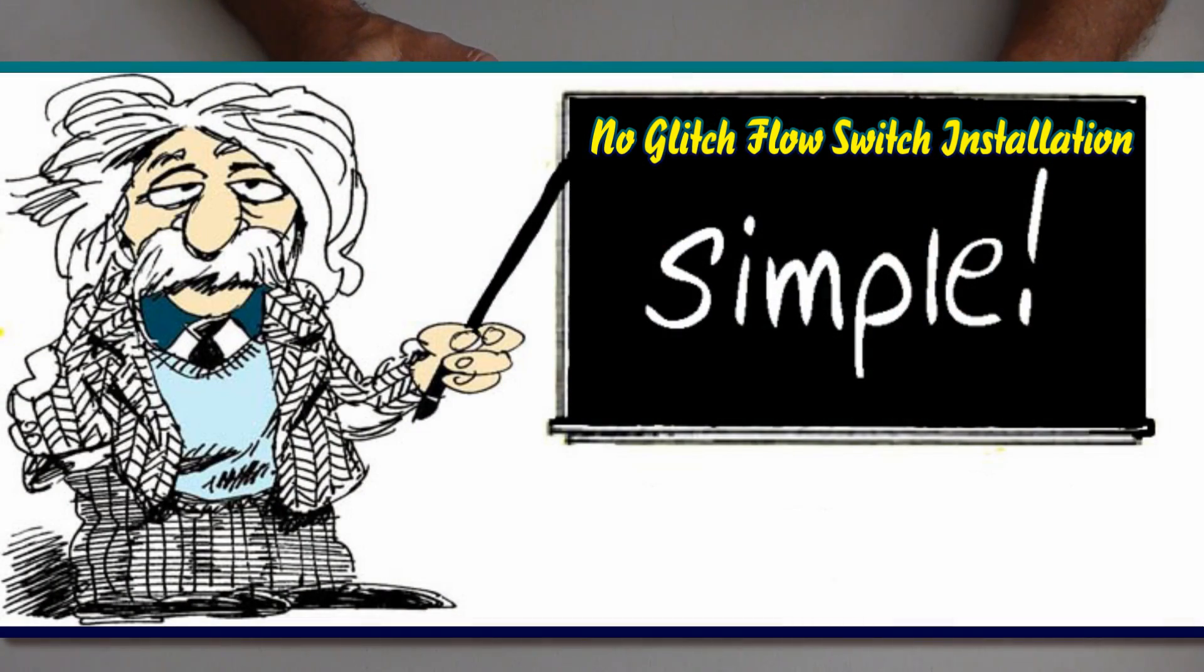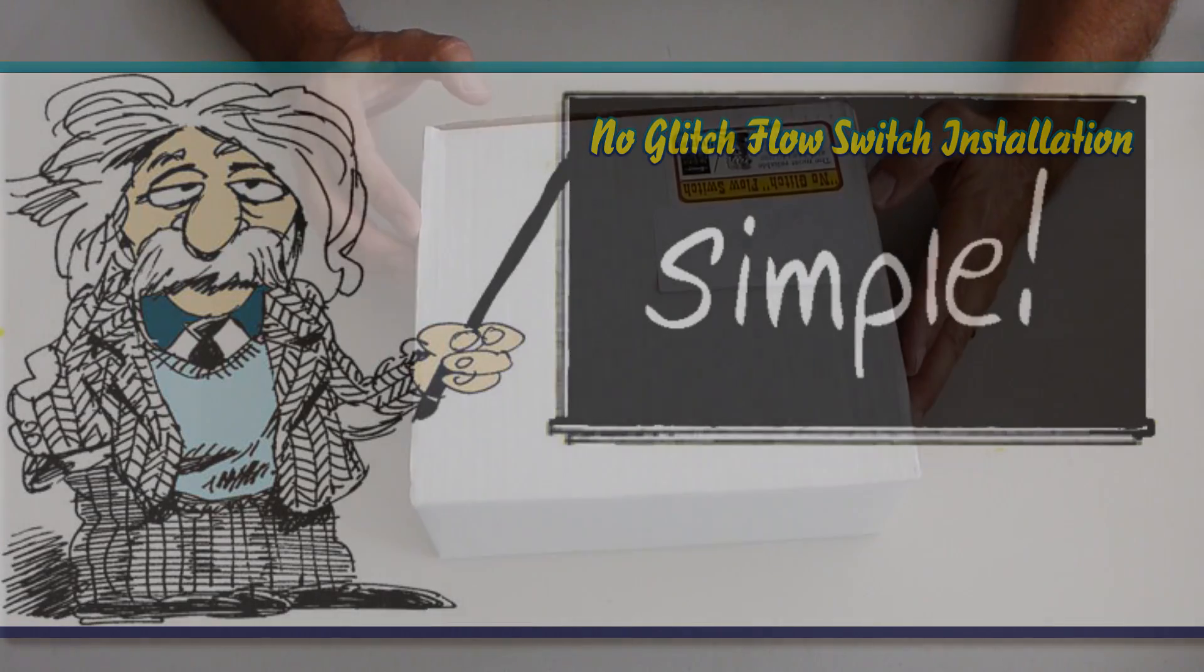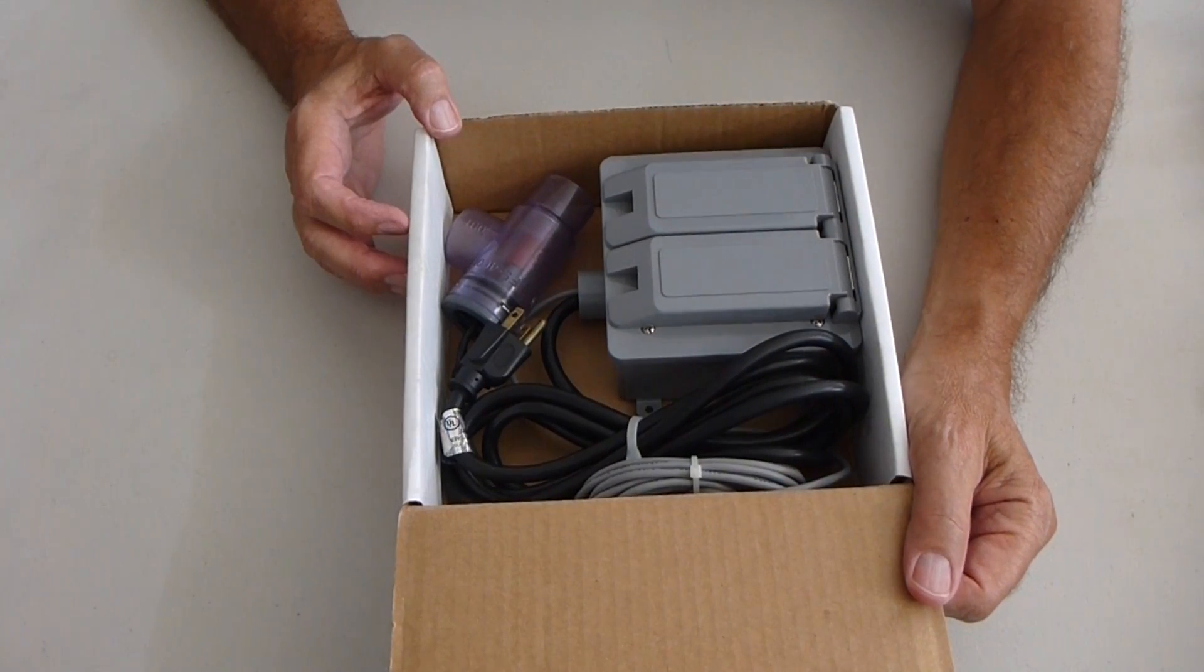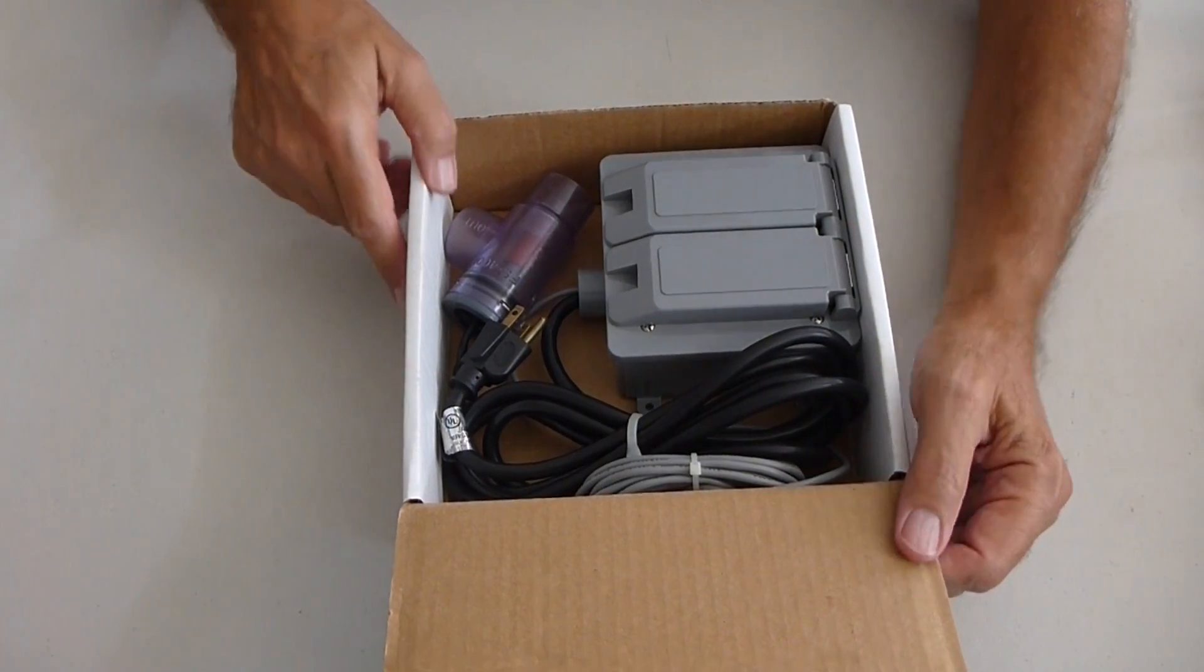What we're going to do today is learn how to install the no glitch flow switch. You'll get it in a box that looks like this. You pop it open and everything that you need is in there.